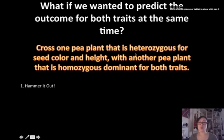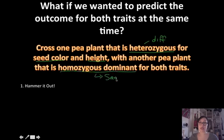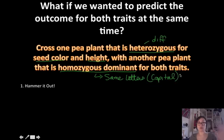The problem says we want to cross one pea plant that is heterozygous — remember, heterozygous means different, so we have two different letters for both seed color as well as height, because we're looking at two traits at once. Then we're going to cross that pea plant with another one that is homozygous dominant for both traits. When we say homozygous dominant, we're talking about the same letters that are all going to be capital in nature, because dominant is always going to be a capital letter. So we've hammered it out.